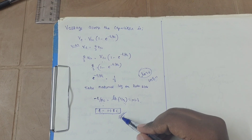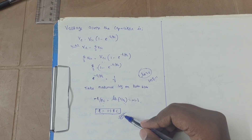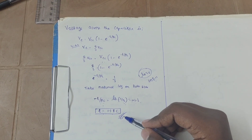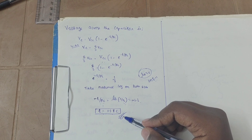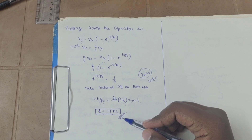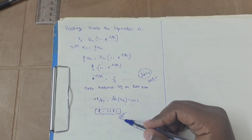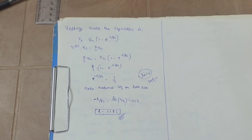That is all. It is the monostable multivibrator using 555 timer. This is the explanation. The notes are in the description and comments. Subscribe and thanks for watching guys.